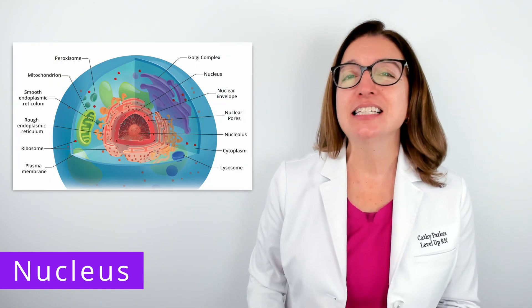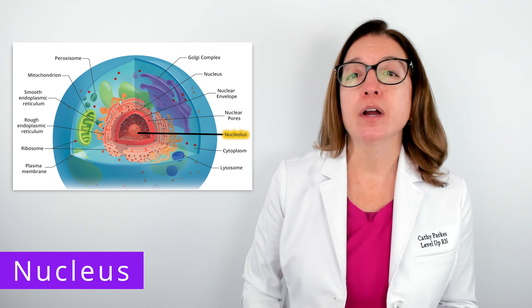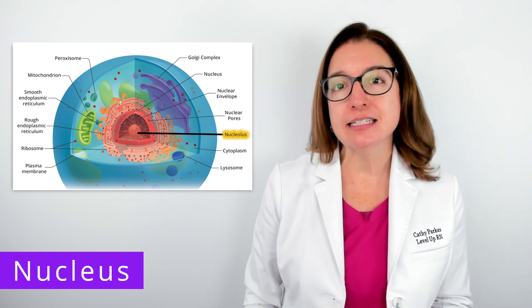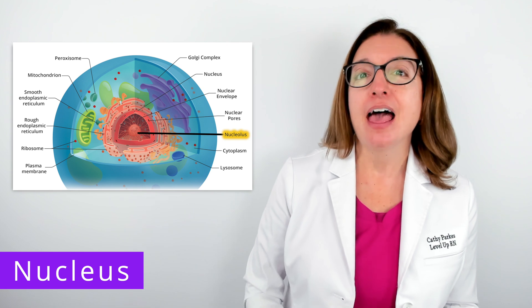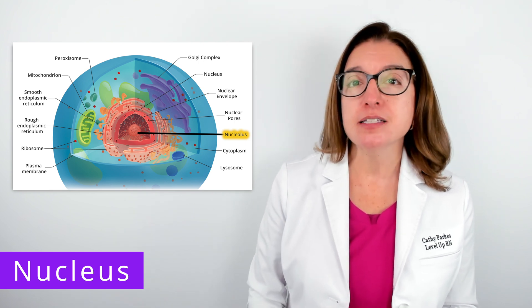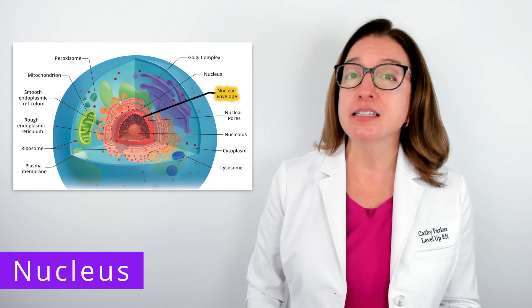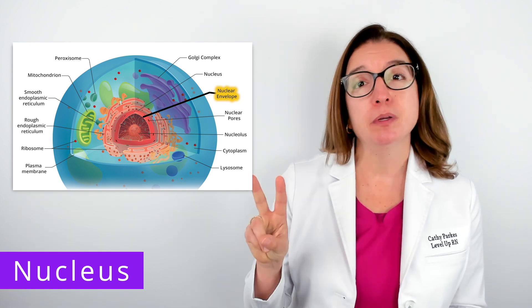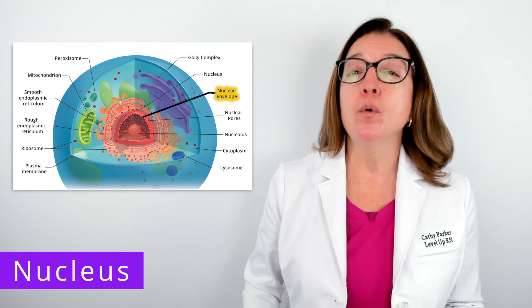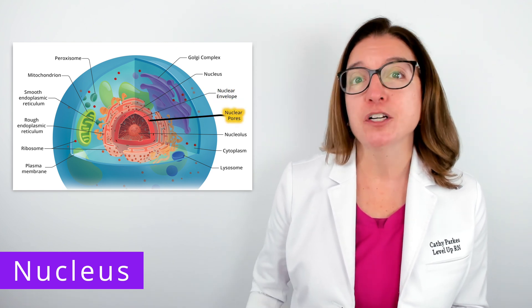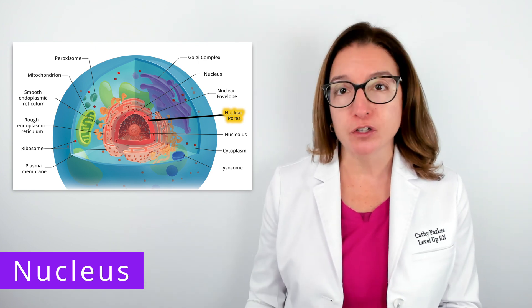In addition to DNA, the cell's nucleus also contains the nucleolus, which is where ribosomal RNA is synthesized and ribosomal subunits are assembled. And then surrounding the nucleus, we have the nuclear envelope. This is a double membrane that consists of two separate lipid bilayers. Within the nuclear envelope, we have nuclear pores, which are channels that control the movement of materials in and out of the nucleus.